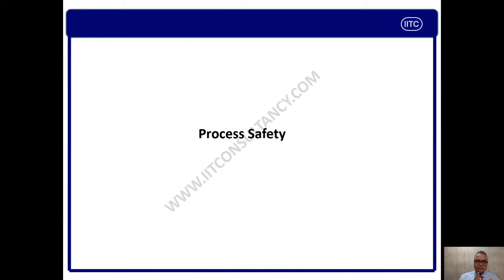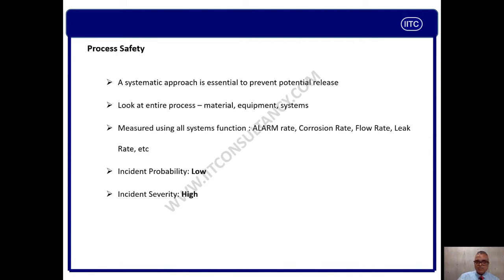Process safety, as per the name, is the safety of a process. It primarily means prevention of LOPC — loss of primary containment. Process safety is a systematic approach to prevent potential release or loss of primary containment. It covers entire processes beginning from material, equipment, systems, and product. It is measured in aspects like alarm rate, corrosion rate, flow rate, and leak rate.